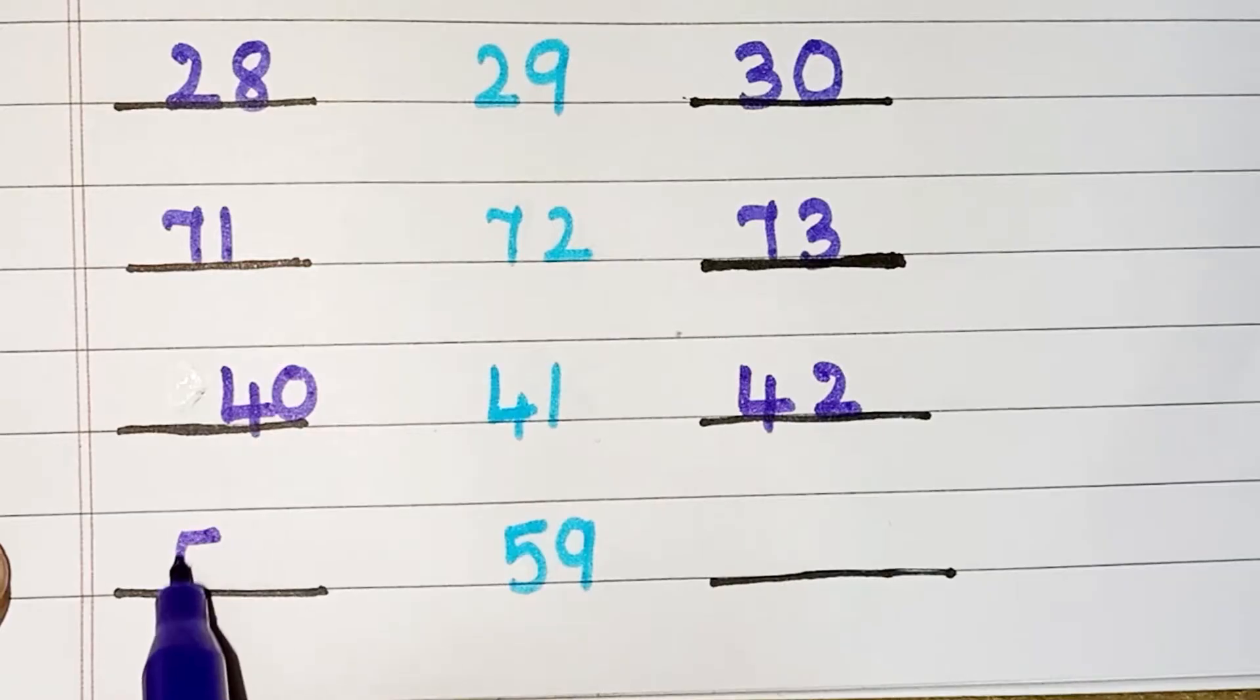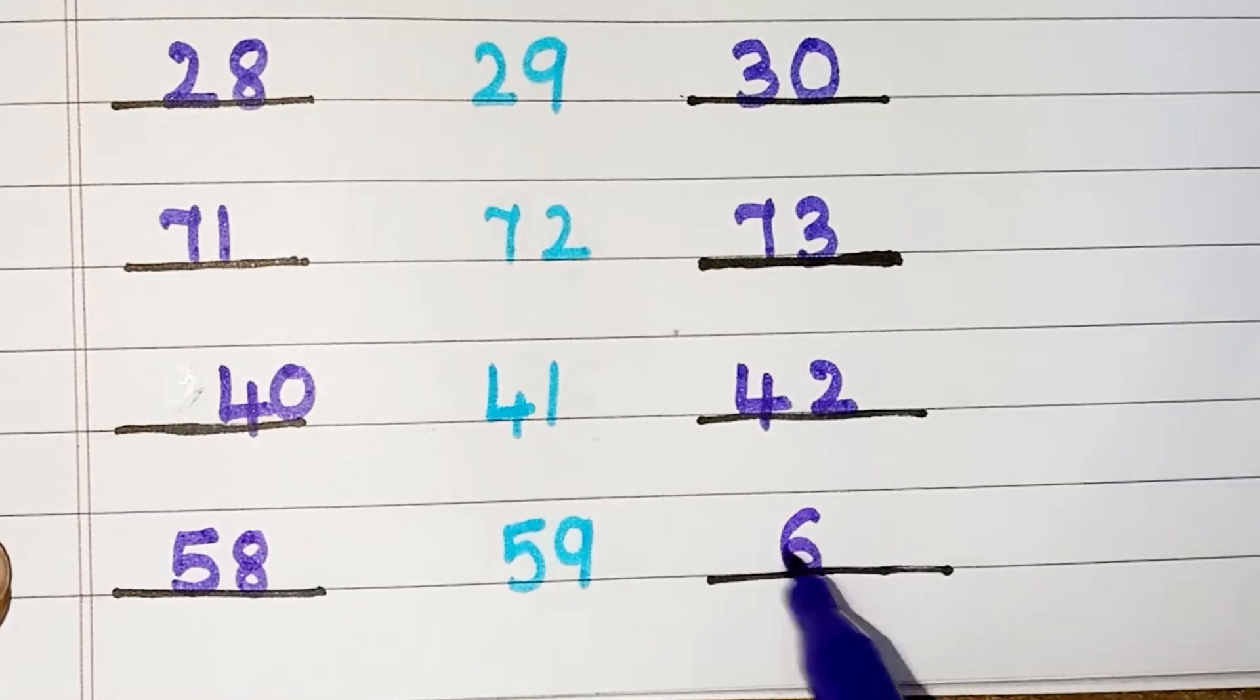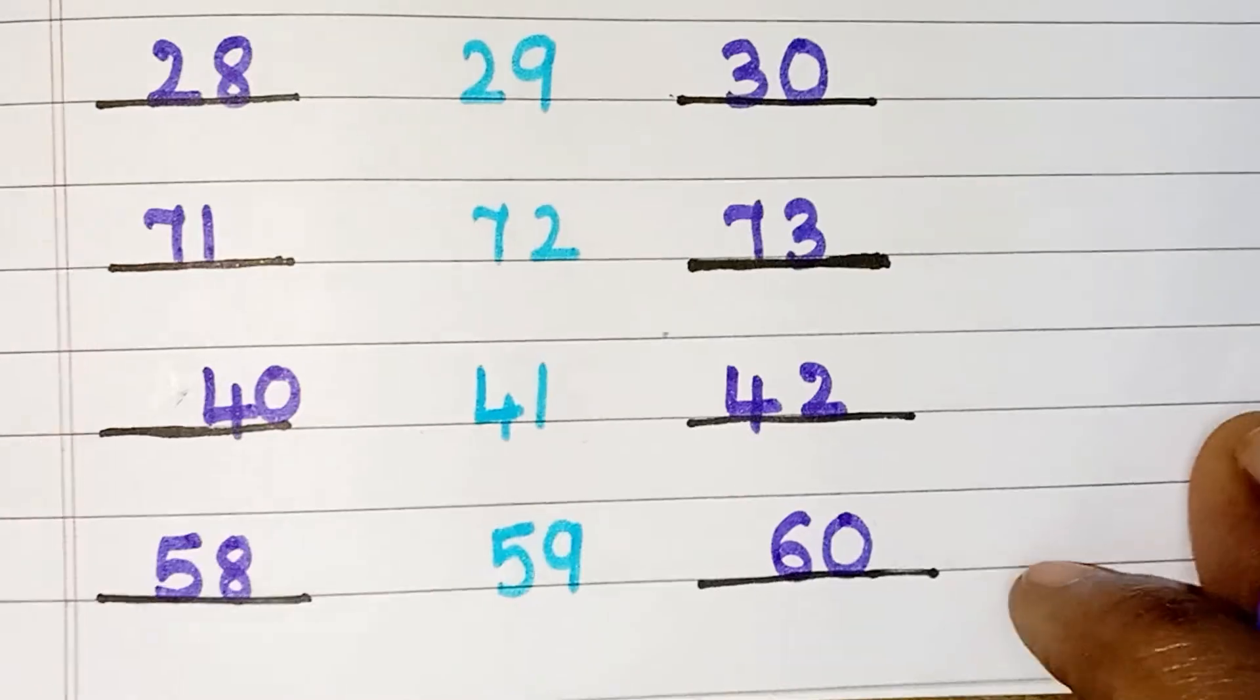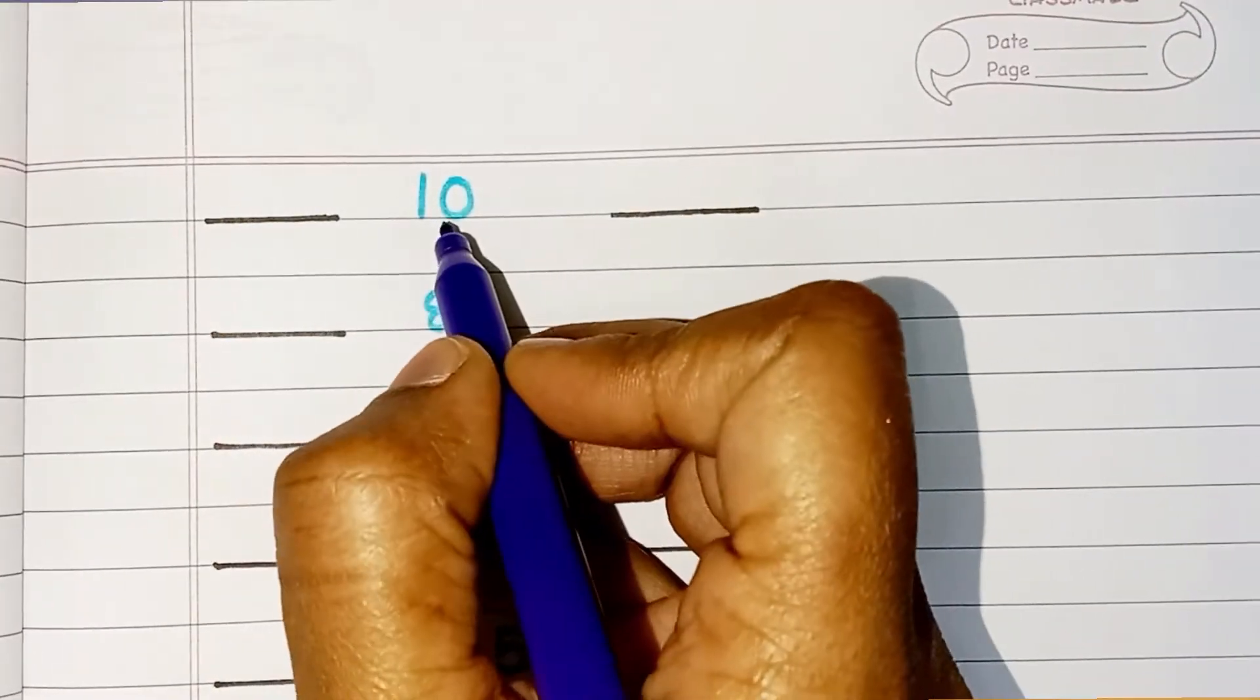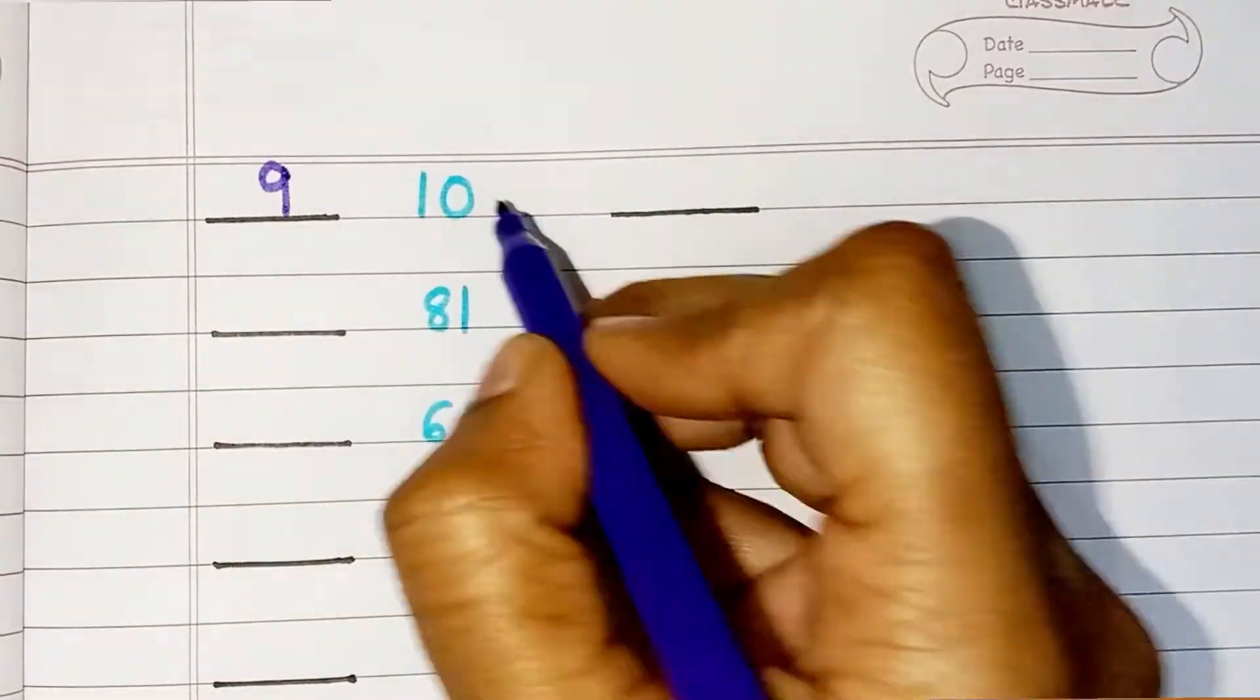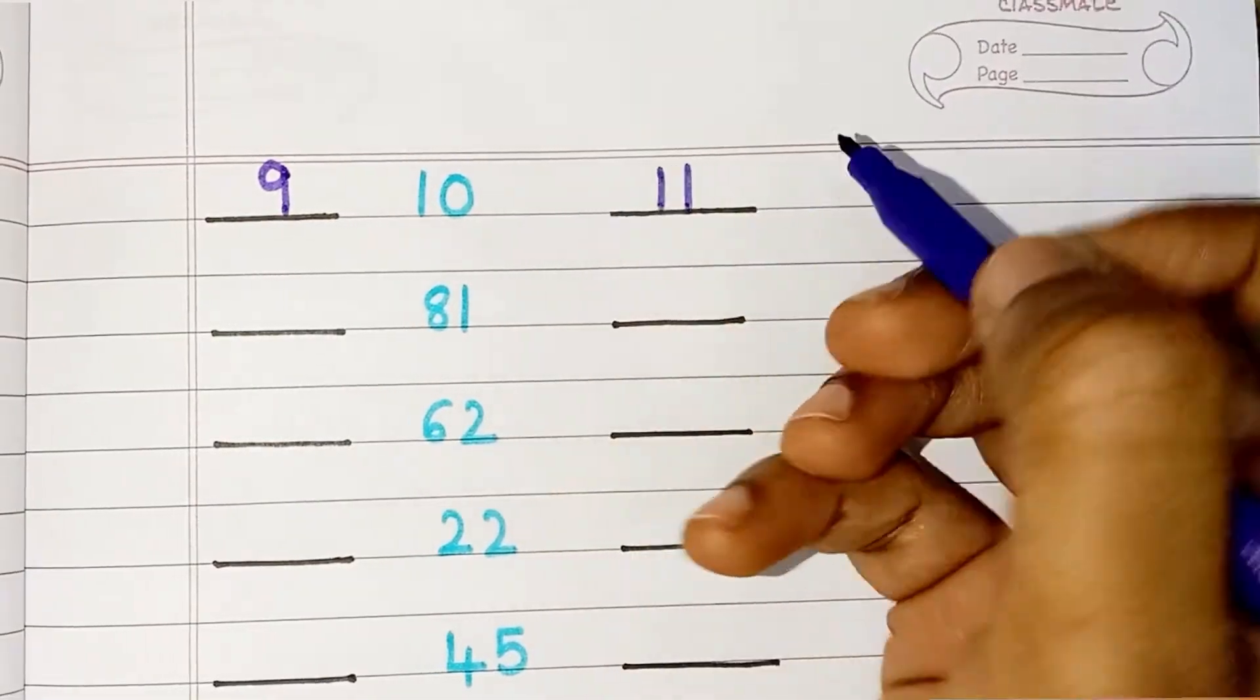Number before 59 is 58. After 59, 60. Number which comes before 10 is 9. Number which comes after 10 is 11.